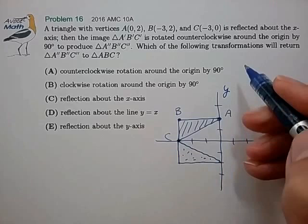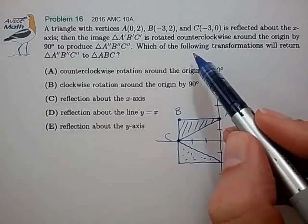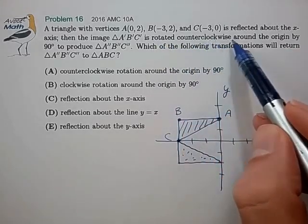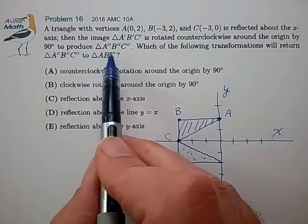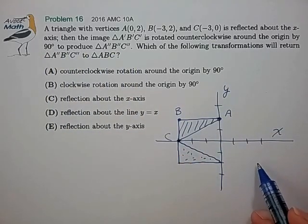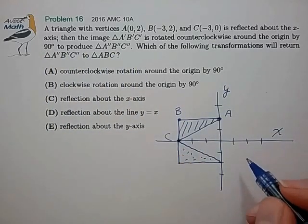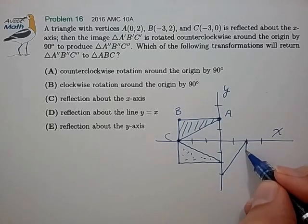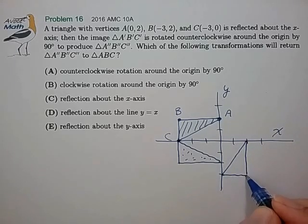And the final transformation is to rotate counterclockwise around the origin by 90 degrees. So we're going to take this triangle and rotate it 90 degrees counterclockwise. So that looks like it creates this triangle in the end.